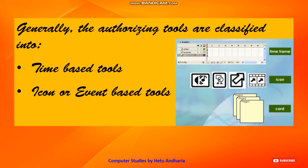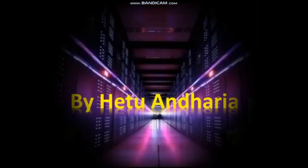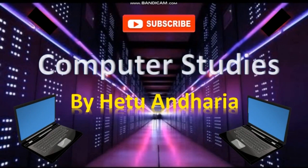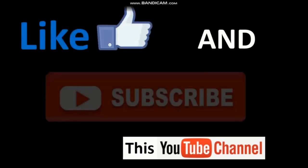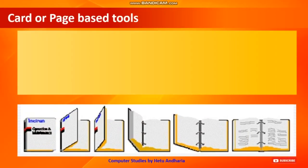The second type is icon or event-based tools, which we can compare to a website — that will be taught in detail later. The third type is card or page-based tools, which will also be covered in detail.